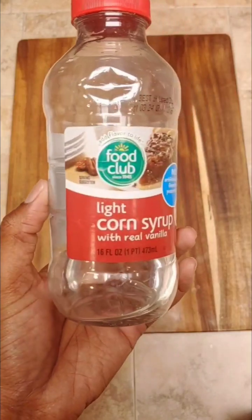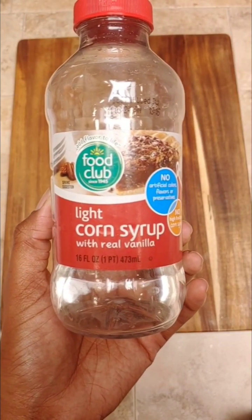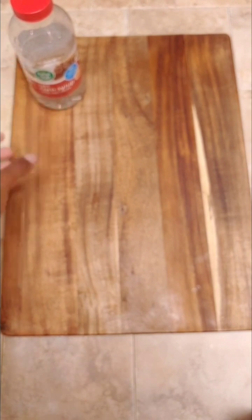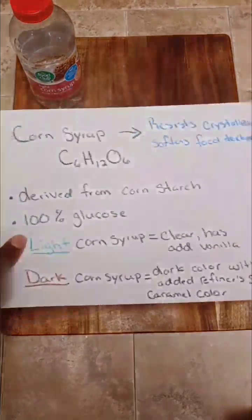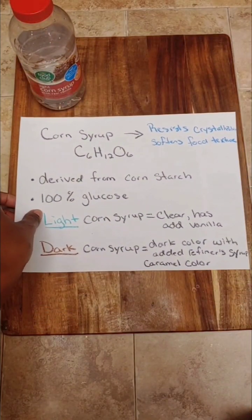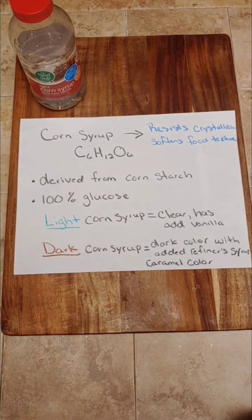And here we have light corn syrup, which is a clear corn syrup that's typically flavored with vanilla. And there's also something called dark corn syrup, which is a corn syrup that is mixed with other sugar syrups to produce a brown or caramel color.